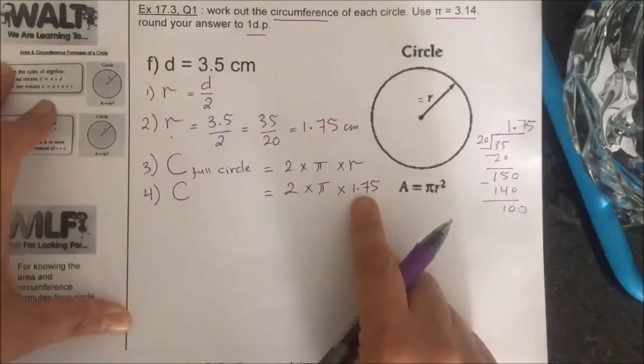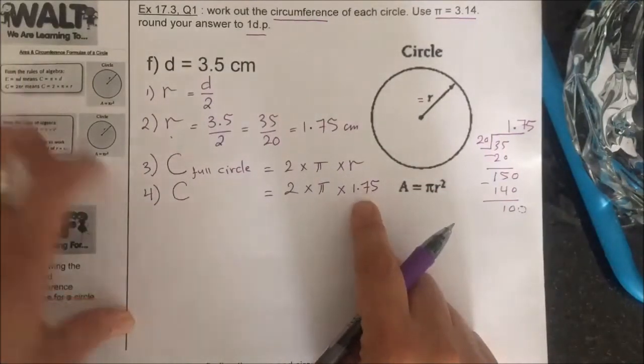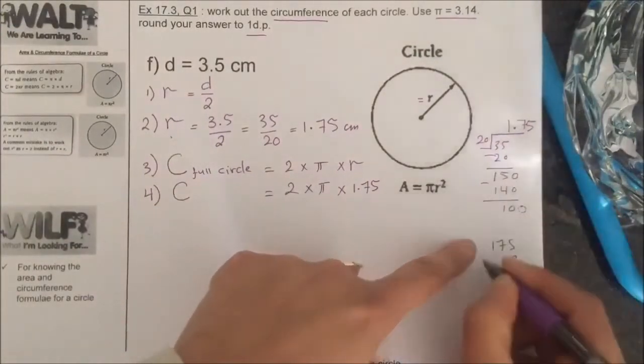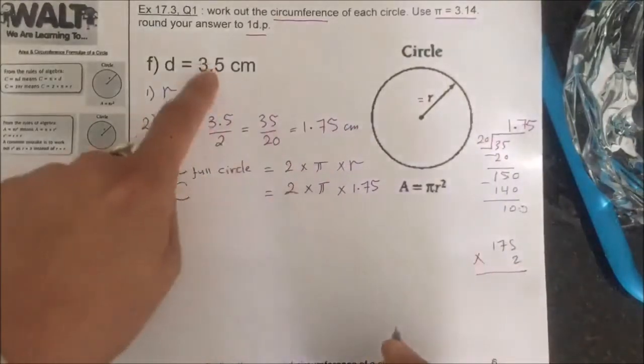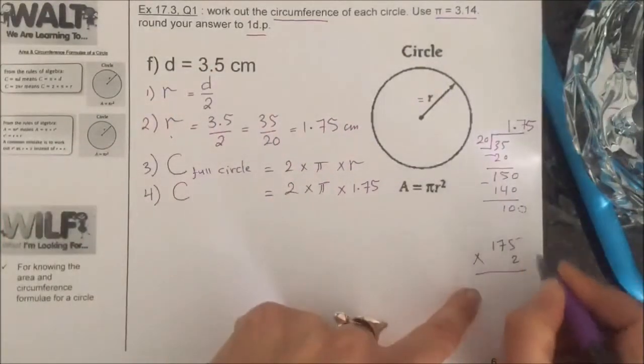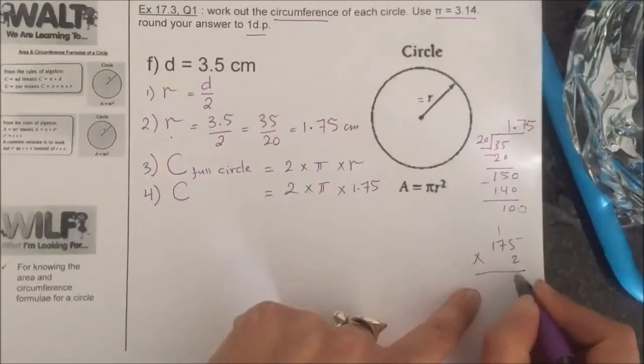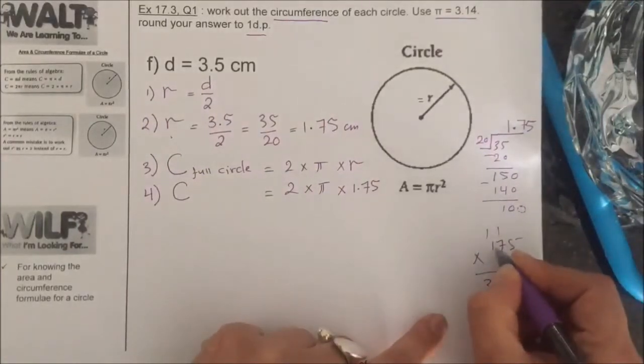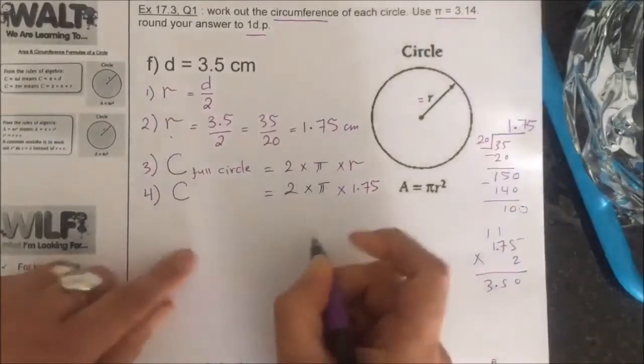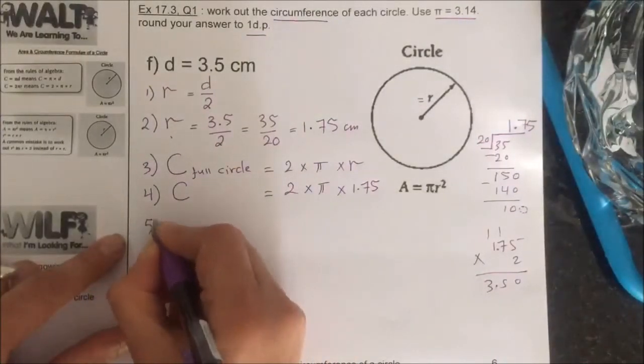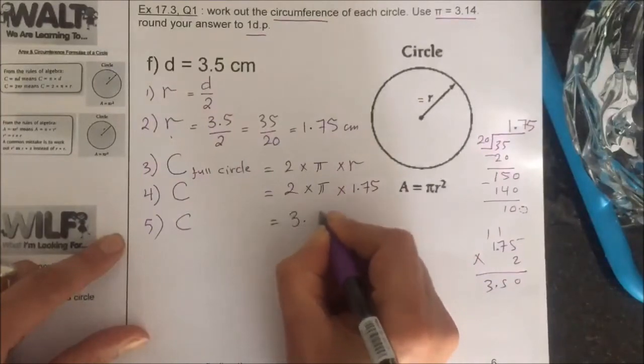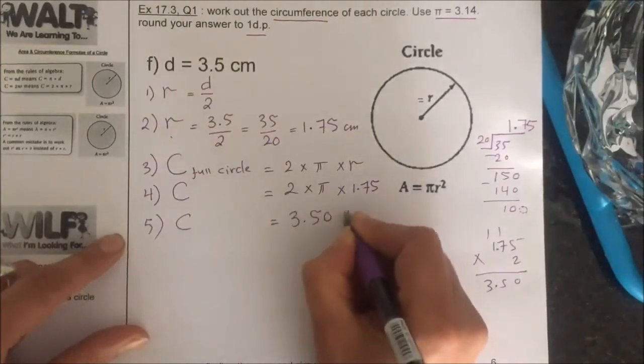So if you multiply 2 times 1.75 times 2. So we know the answer. It's going to be 3.5. So it's 10, 14, 15, 3, decimal here, 1, 2. So C is going to be 3.50 pi.